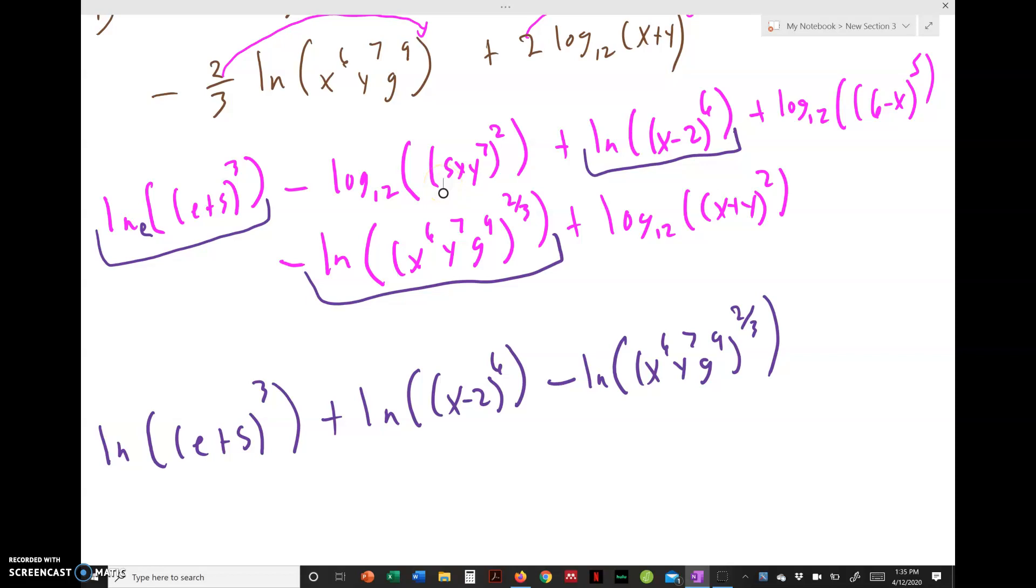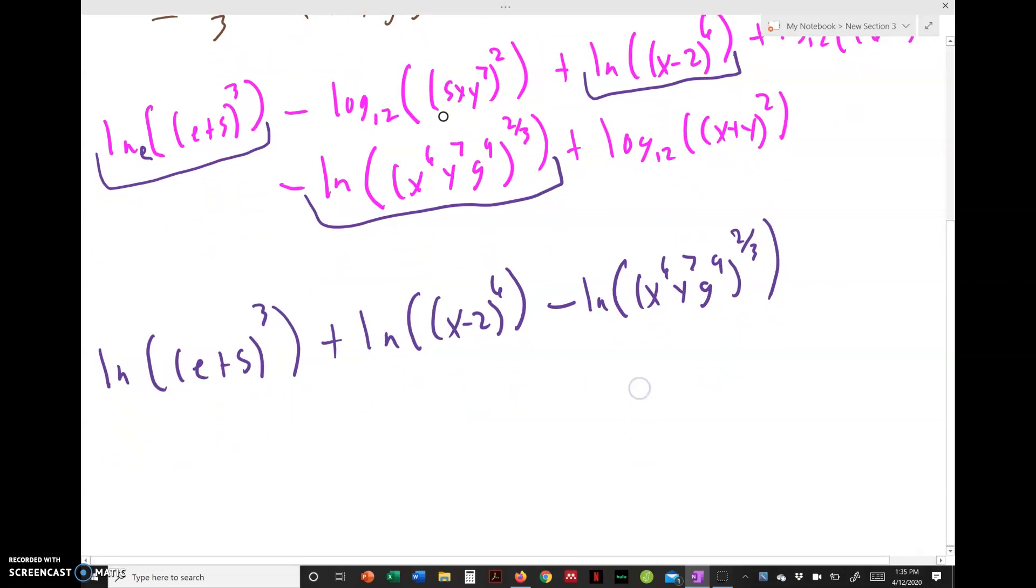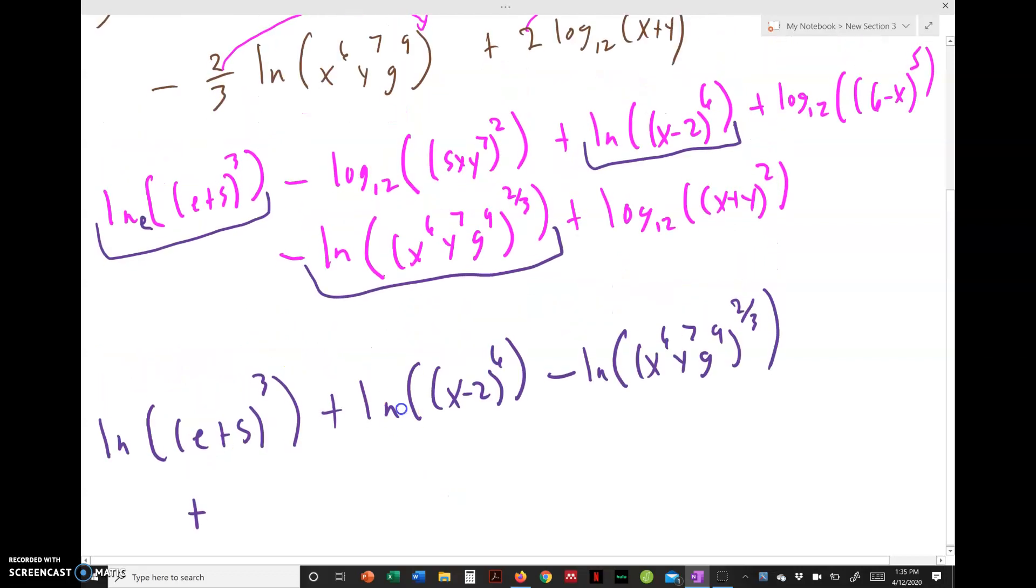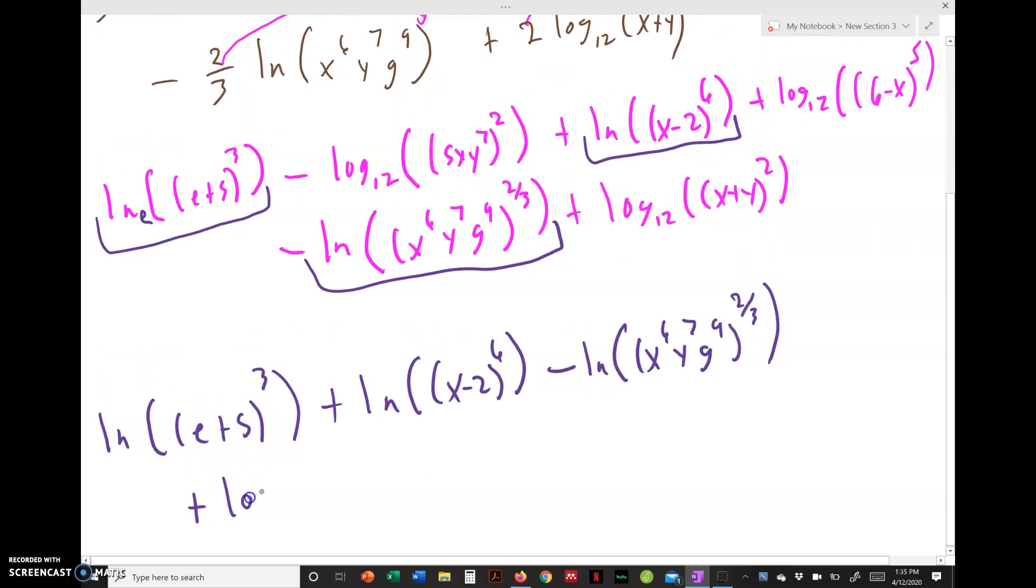Does it matter the order? No. So we'll do ln of (e+5)^3 plus ln of (x-2)^6 minus ln of (x^6 y^7 g^9)^(2/3), plus log base 12 of (6-x)^5 plus log base 12 of (x+y)^2 minus log base 12 of (5xy^7)^2.